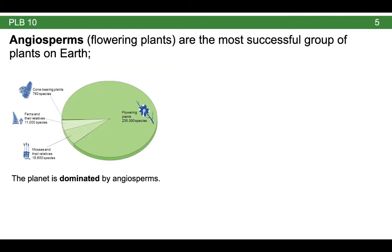The first thing to notice is that the angiosperms or flowering plants are the most successful group of plants on earth. If you have a look at this figure you can see that the vast majority of plants on earth are indeed flowering plants. This figure is actually a little outdated. There are nearly 300,000 species of flowering plants. Pine trees don't even account for a thousand species and ferns are about 11,000 species. The mosses and their relatives, including things like hornworts and liverworts, are actually more diverse than ferns, but we don't know very much about them because they tend to be kind of small, obscure plants. Either way, the planet is dominated by angiosperms.